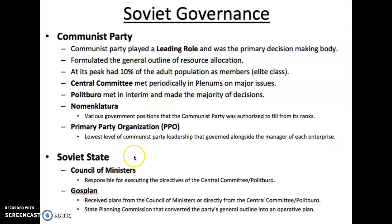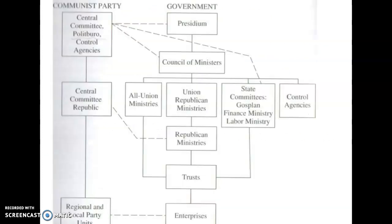The Soviet state consisted at its highest level of the Council of Ministers and the Gosplan. The Communist Party — with the Central Committee and Politburo at the top — sits on one side, while government itself is represented by the Council of Ministers and the Gosplan on the other.